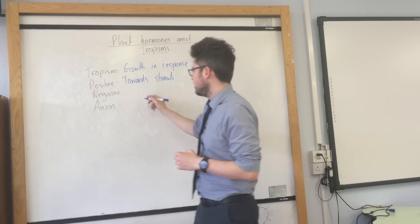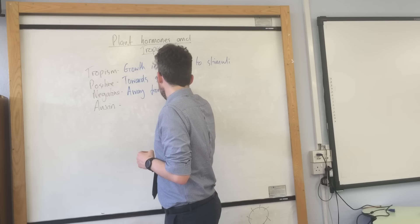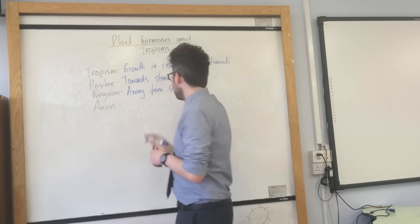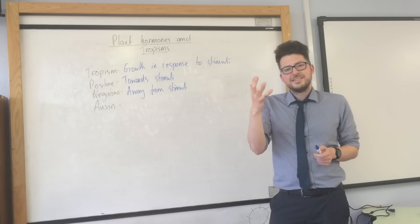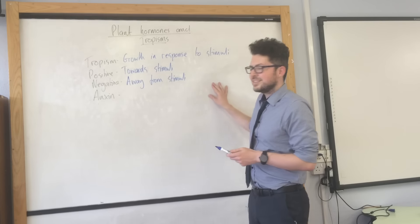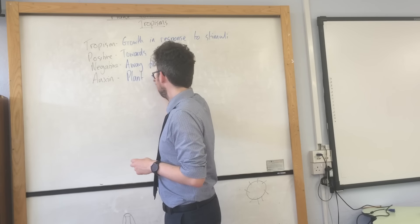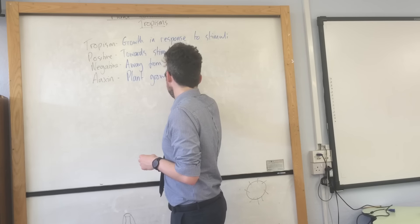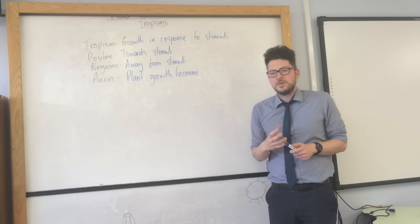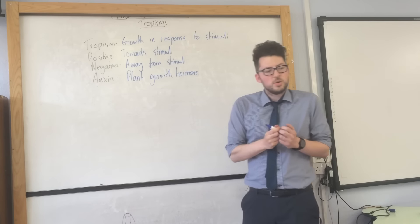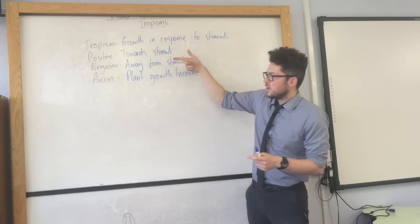Negative means away from the stimuli. So for example, the shoot of a plant growing away from the light would be negative phototropism. Auxin is the hormone that controls this growth. So towards would be positive, away would be negative.